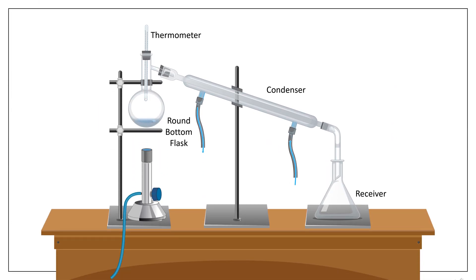Working of simple distillation: the liquid which is required to be distilled is filled in the round bottom flask. A thermometer is inserted to check the temperature inside the flask. The contents in the flask are heated and the vapors of the boiling liquid begin to rise up and enter into the condenser.